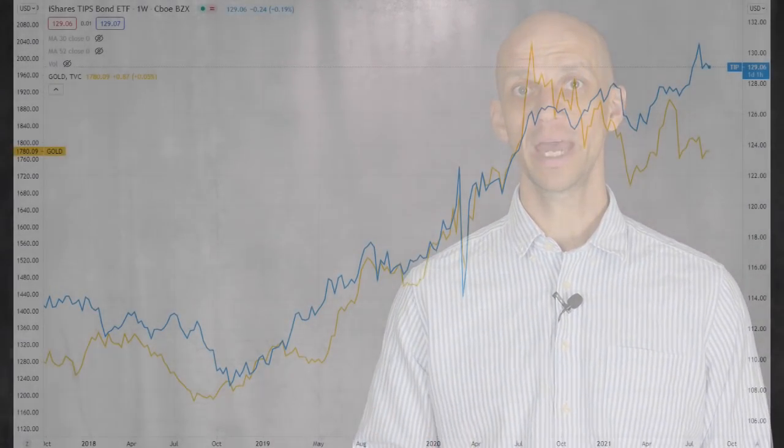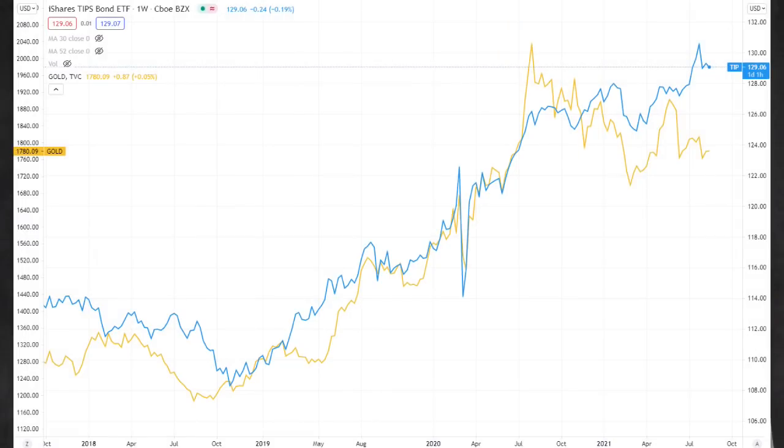Additionally, the traditional sign that gold watchers look out for has been the real yield, but if we compare here, the gold price in yellow on the left-hand side and the iShares TIPS bond ETF in blue on the right-hand side, which generally move together, as we can see here, they have diverged noticeably in recent weeks.